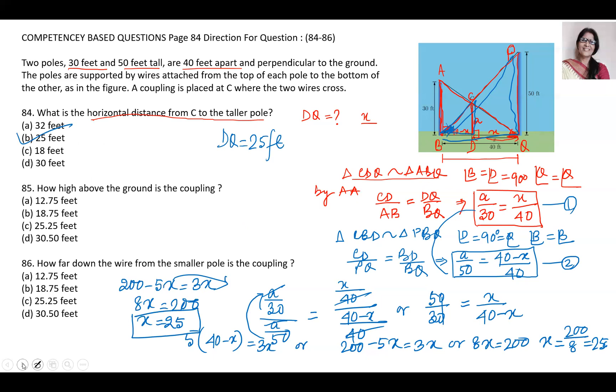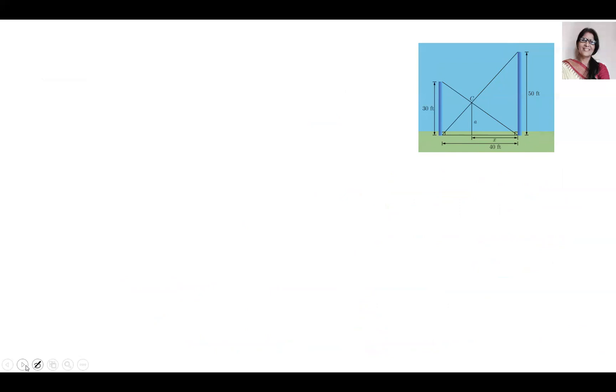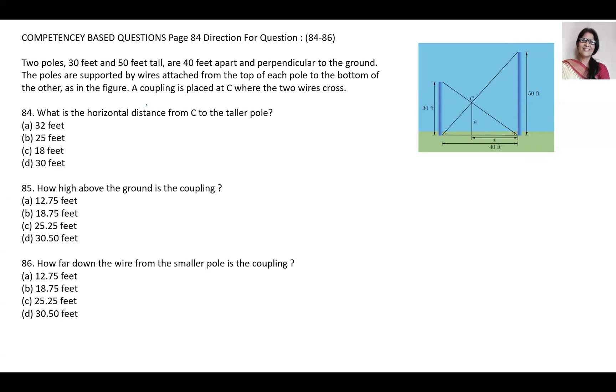Welcome to part two. If DQ is 25, then BD equals 15 because the total is 40. Now the question is how high above the ground is the coupling. The question is about CD, how much will be CD. We have taken CD as H.